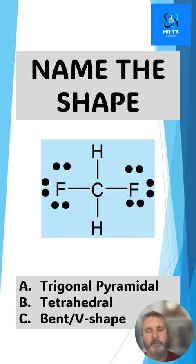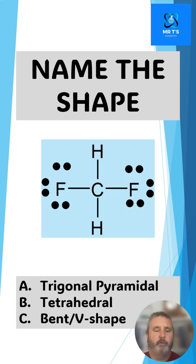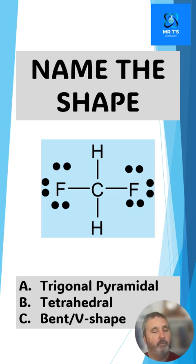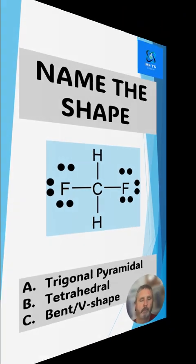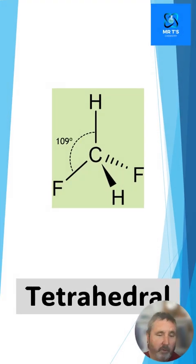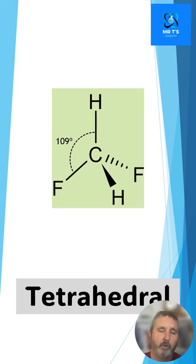Here is our seventh molecule. This is a carbon with two hydrogens and two fluorides coming off it. What shape does it produce? A trigonal pyramidal, B tetrahedral, or C bent or V-shaped? Of course, with four bonds around the central atom, there are four electron density regions pushing away from each other as much as possible, and we're going to produce a tetrahedral shape.